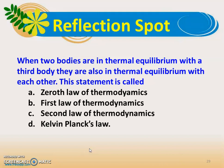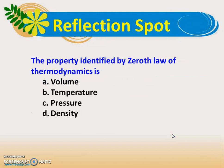We have a question. When two bodies are in thermal equilibrium with a third body, they are also in thermal equilibrium with each other. This statement is called the zeroth law of thermodynamics. The property identified by the zeroth law of thermodynamics — check your answer. If your answer is temperature, you are correct.